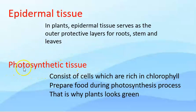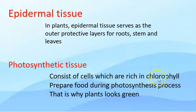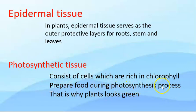Photosynthetic tissue consists of cells which are rich in chlorophyll. Chlorophyll is a green pigment that absorbs sunlight and is used for photosynthesis. Photosynthetic tissue prepares food during the photosynthesis process. That is why plants look green — because of chlorophyll, a green pigment.